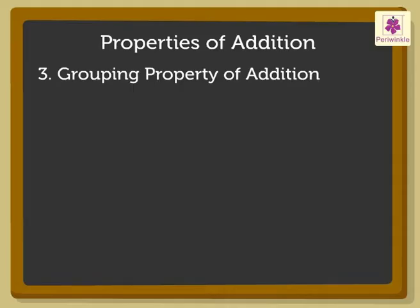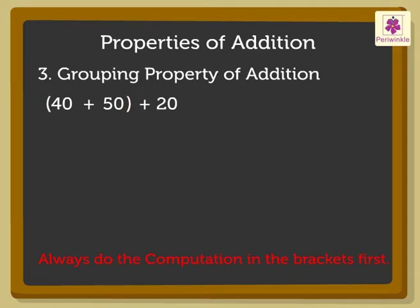Grouping property of addition. Look at the numbers 40, 50 and 20. Let us add the numbers by putting two numbers in a bracket: 40 plus 50 in bracket plus 20. Remember, always do the computation in the brackets first. So, 40 plus 50 is equal to 90. Now, we add 20 to 90 and get the sum 110.